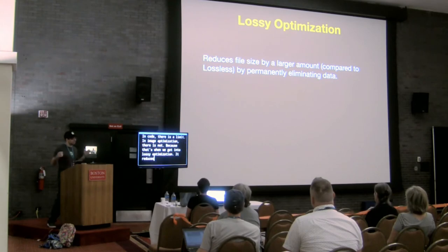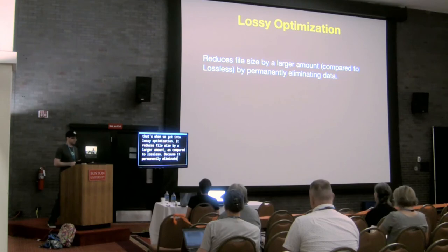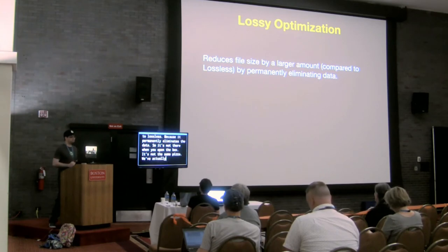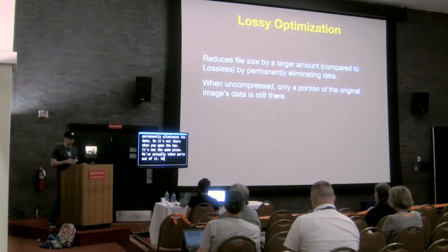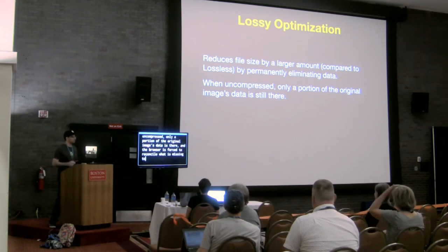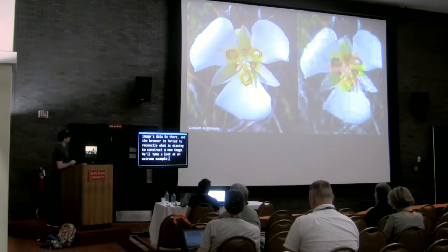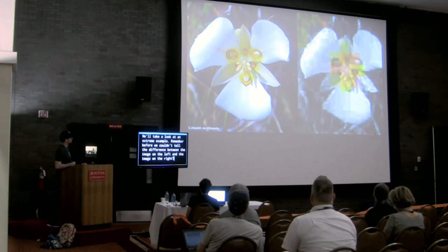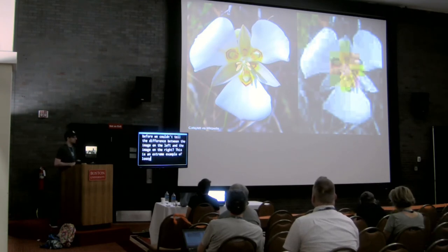Lossy optimization reduces file size by a larger amount compared to lossless because it permanently eliminates data — so it's not there when you open the box; it's not the same pizza; we've actually taken parts out of it. When uncompressed, only a portion of the original image's data is there and the browser is forced to reconcile what is missing to construct a new image. This is an extreme example of lossy optimization where someone — some human in the workflow — has pushed it too far.